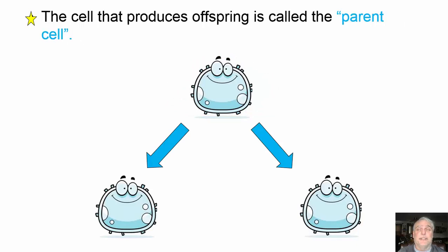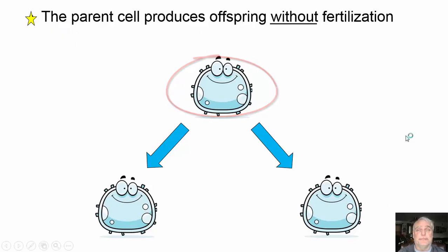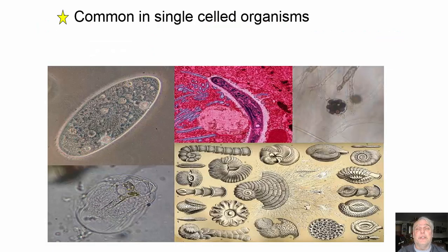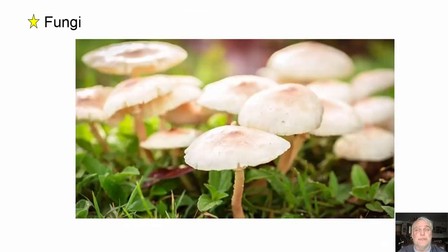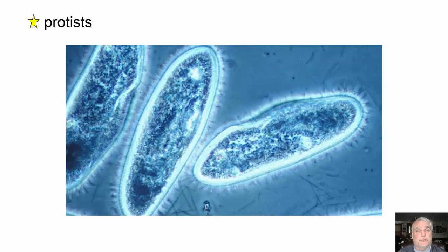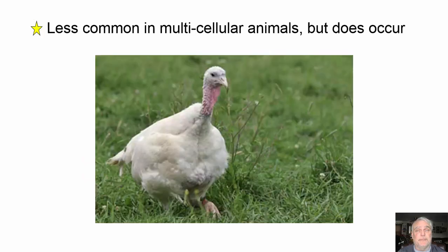The cell that produces the offspring is called the parent cell. The parent cell produces offspring without fertilization — that is a main difference between asexual and sexual reproduction. What types of organisms employ asexual reproduction? Please keep in mind there are exceptions to all of these things. First, single-celled organisms: asexual reproduction is very common in single-celled organisms, fungi, bacteria, and protists. Many plants also reproduce asexually.